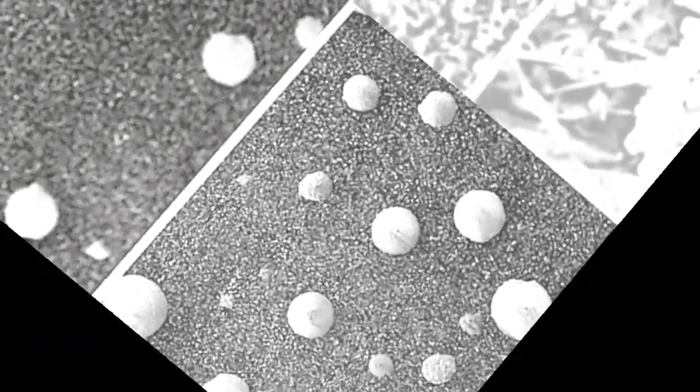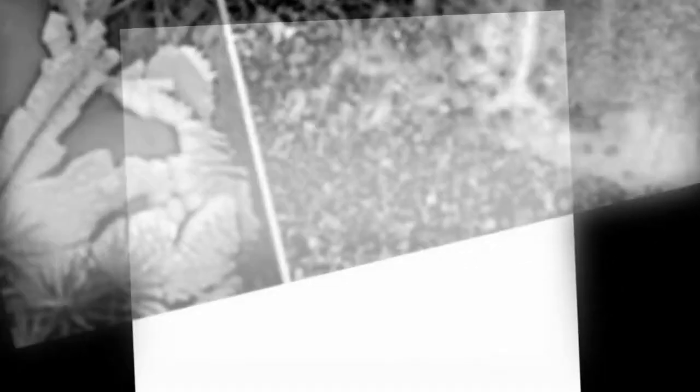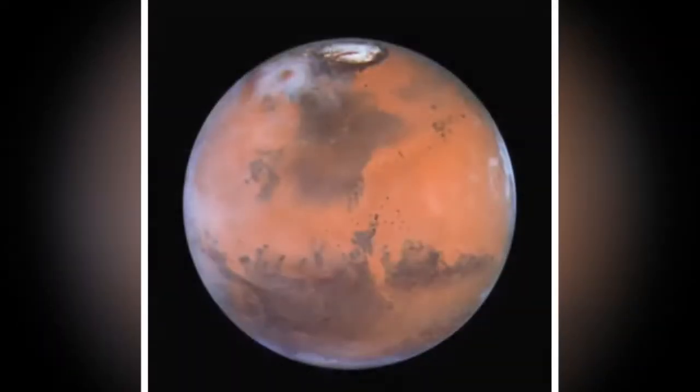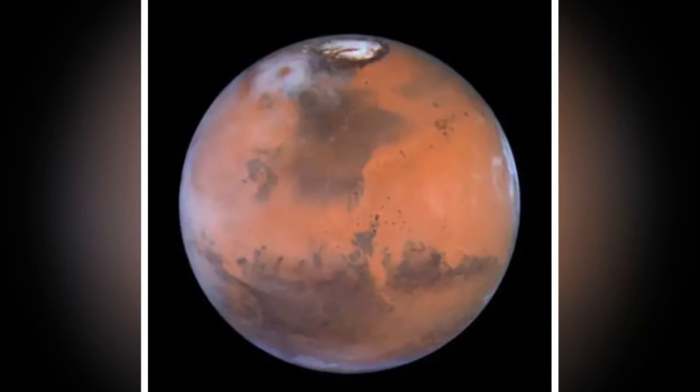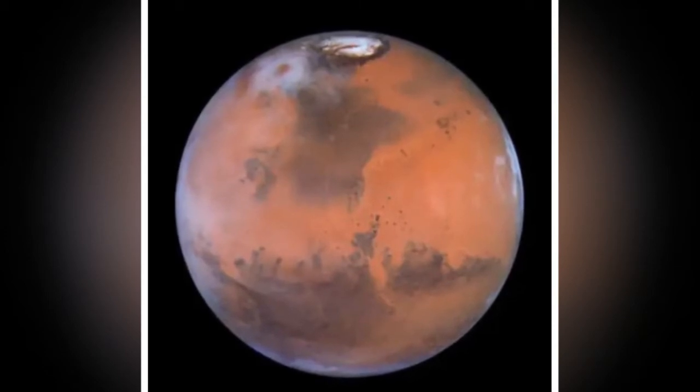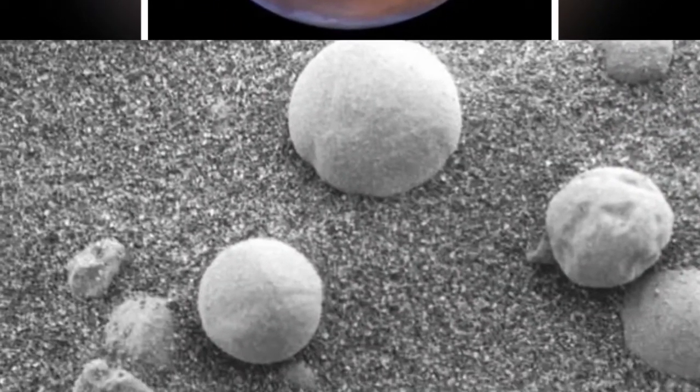In regards to how this proved that there could be life on Mars, the trio went on to explain: all the similarities in morphology are not proof of life, but growth, movement, and changes in shape and location constitute behavior and support the hypothesis there is life on Mars.